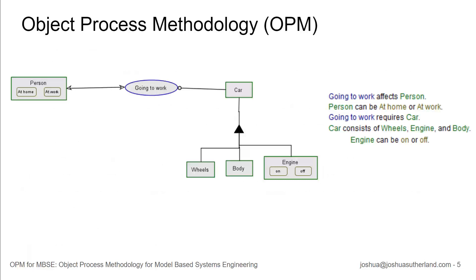That was quite a lot of technical jargon. Let's get right down into what OPM is. Here you can see an example of an OPM model. Right in the center, there's 'going to work.' To the left, you can see 'person.' And person is affected by going to work. So without much knowledge of this language, we can say maybe this is doing something, or this is the thing that's being acted upon. And also there's 'car' here. And car is interacting with going to work, so maybe car enables going to work.